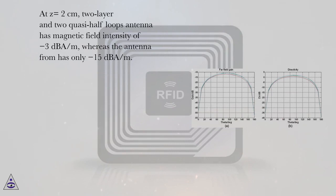At z equals 2 cm, two-layer and two quasi-half loops antenna has magnetic field intensity of minus 3 dB/m, whereas the antenna from reference has only minus 15 dB/m.